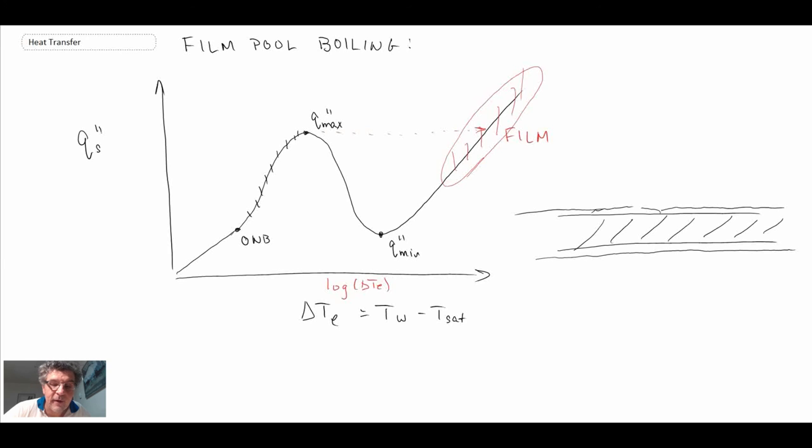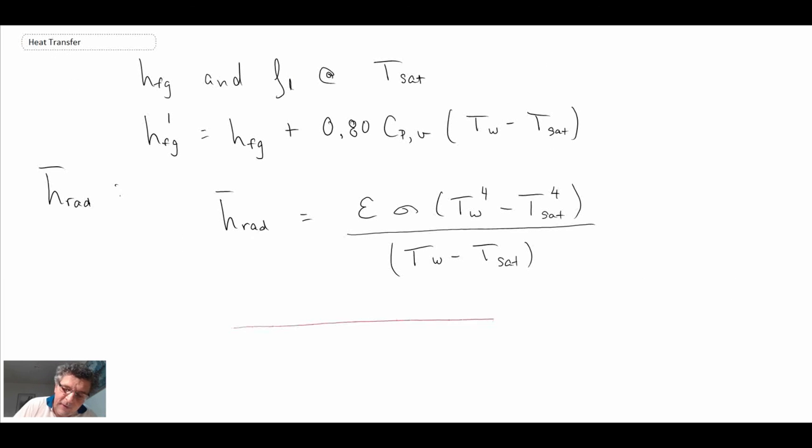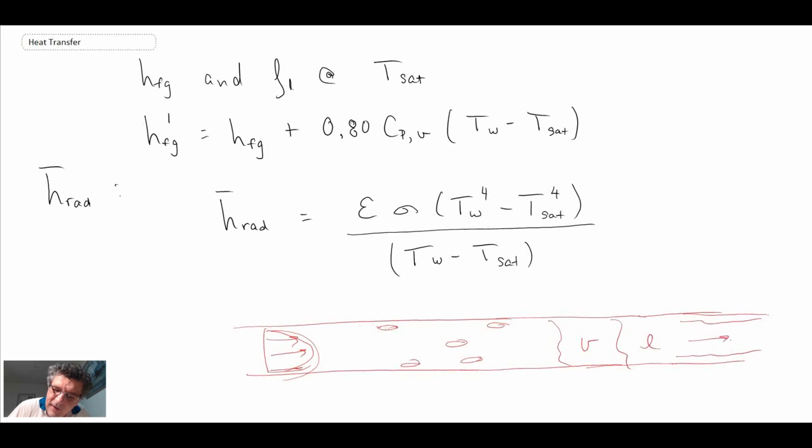That covers pool boiling. There's also forced convection boiling, but we're not going to cover it in this course because it gets quite complex—you're dealing with multi-phase flow. Typically, we'd look at pipe flow. You'd start with liquid flow, probably turbulent, but then you'd start getting bubbles forming. Multi-phase flow goes through different regimes: dispersed phase bubbles, slug flow, plug flow where you might have vapor then liquid, annular flow with liquid on the wall and vapor in the middle.